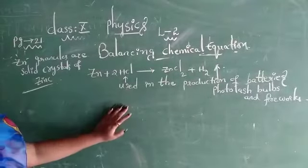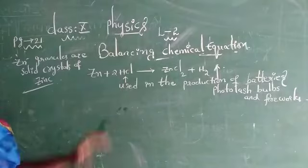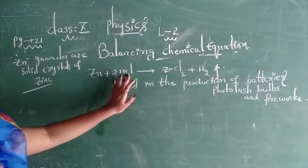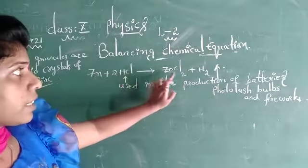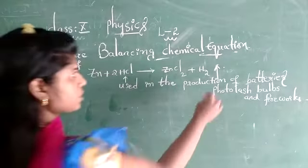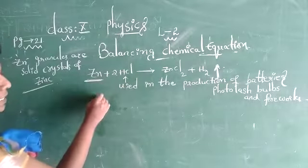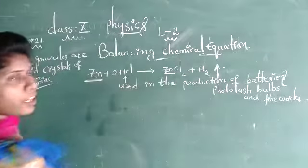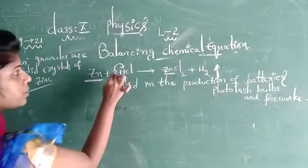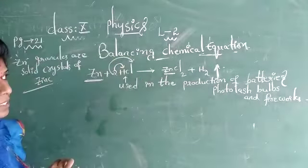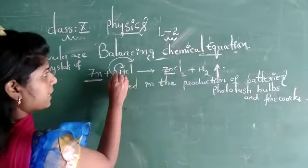I am going to be explaining balancing chemical equations for activity 3: zinc plus 2 molecules of hydrochloric acid gives rise to zinc chloride plus hydrogen gas is liberated. Here, 1 molecule of zinc is present on each side, 2 molecules of hydrogen are present, and 2 molecules of chlorine are present — that is the reason for Cl₂.